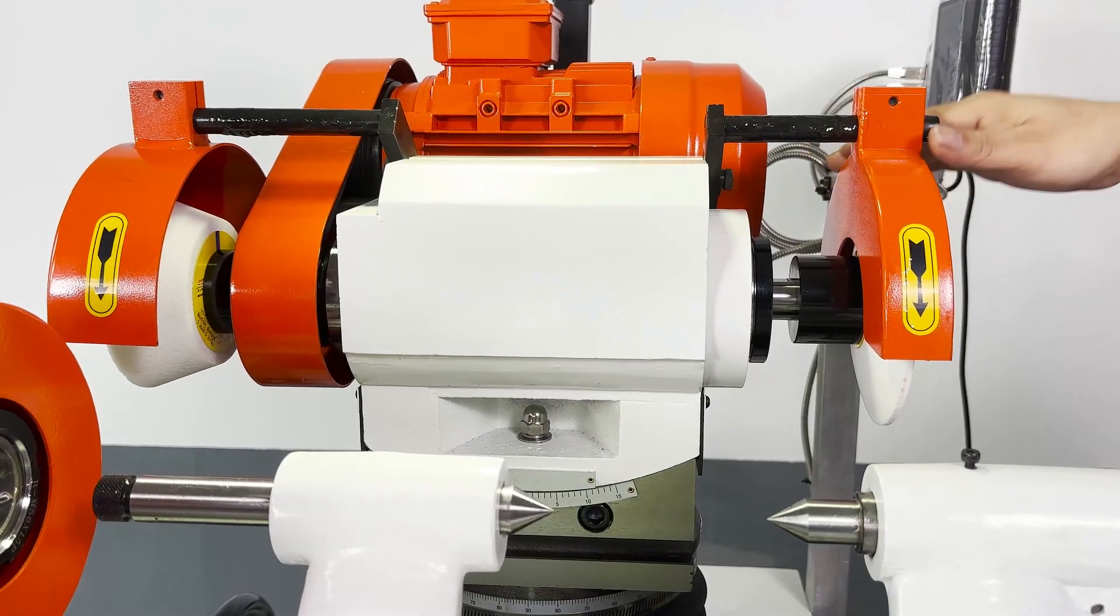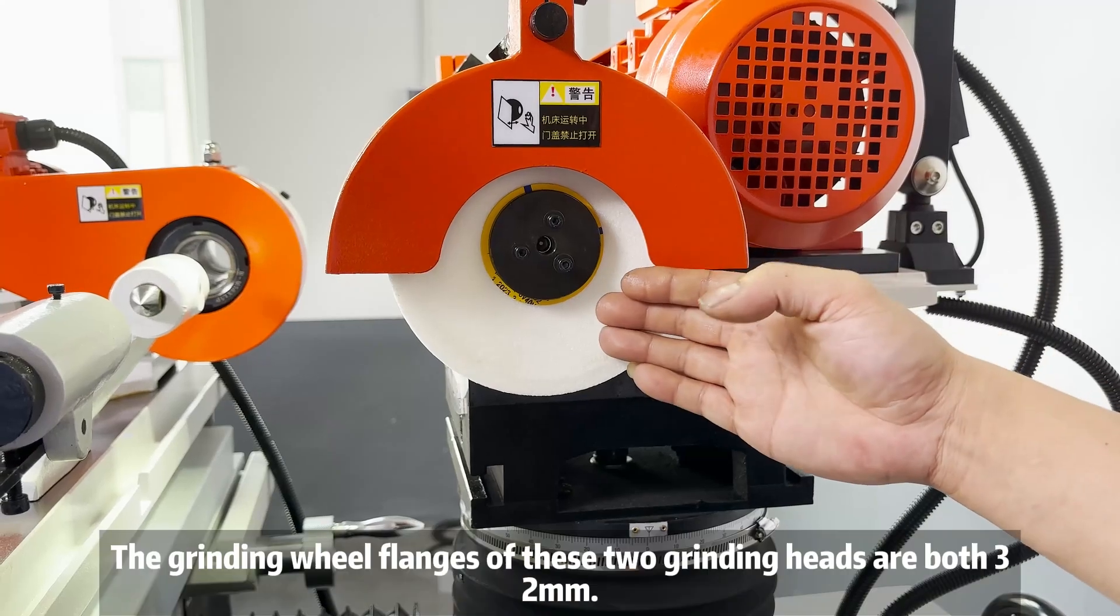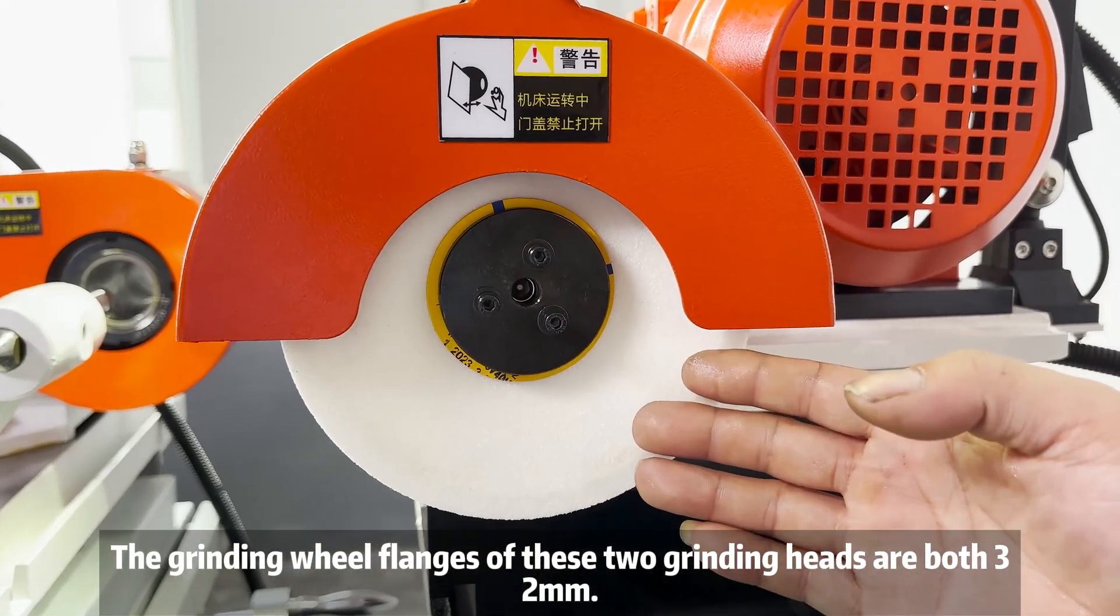This is the grinding head with two grinding wheels. The grinding wheel flanges of these two grinding heads are both 32mm.